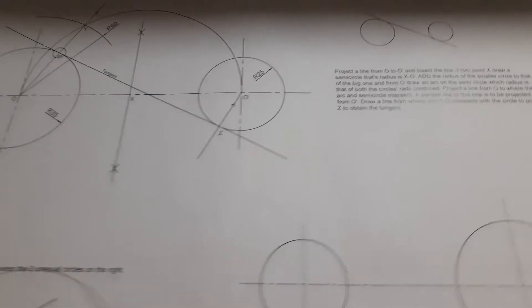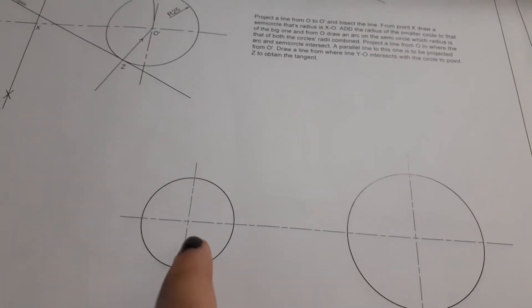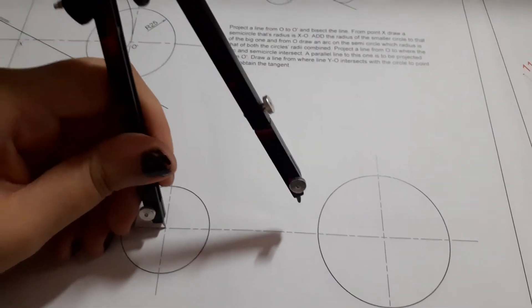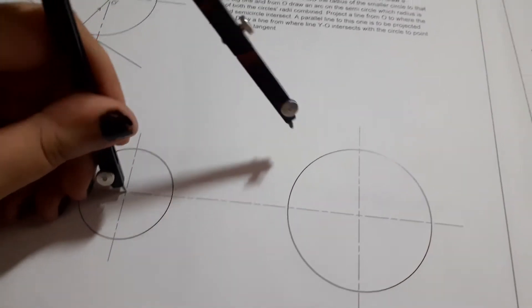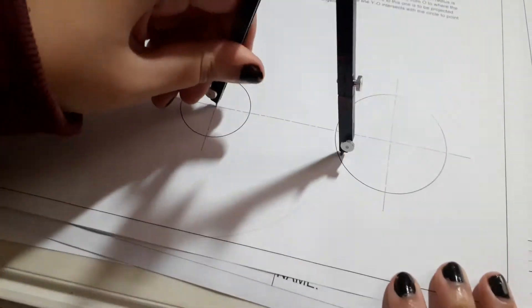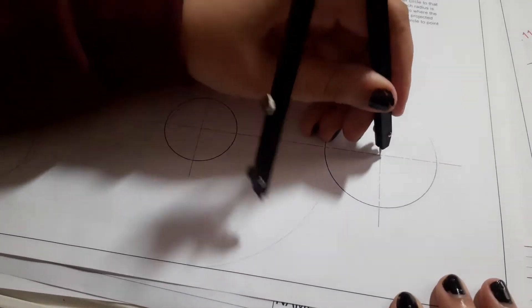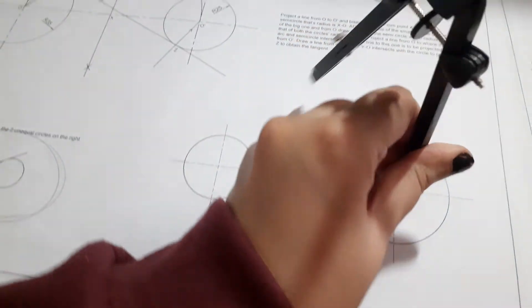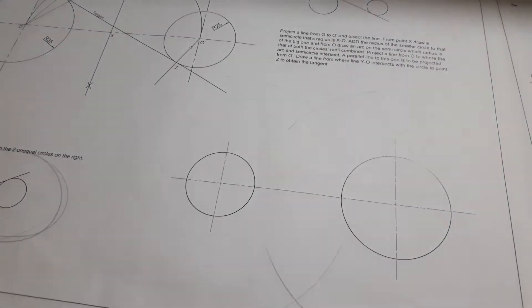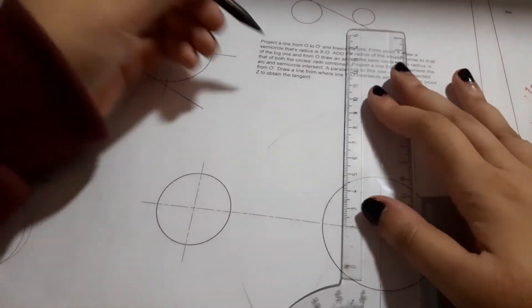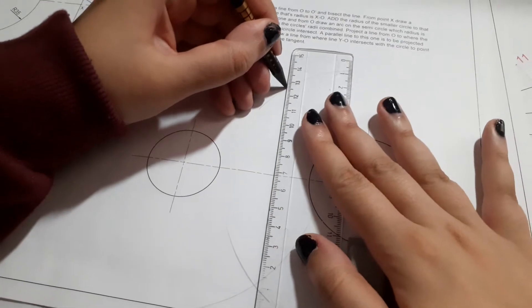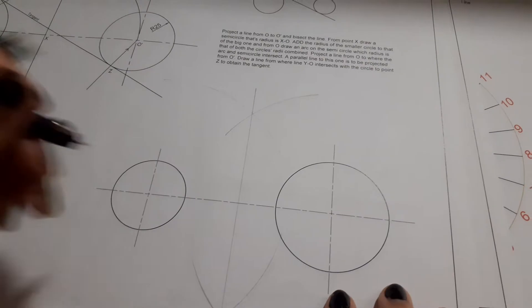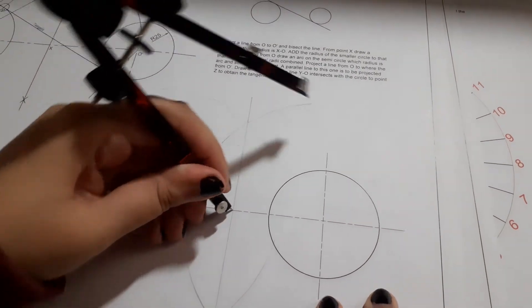First, we need to bisect the line from one center to the other. Then we'll draw the semicircle from this point.